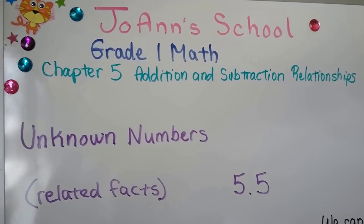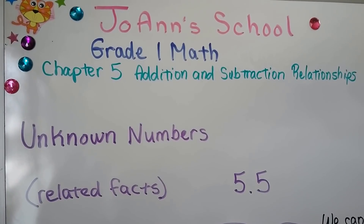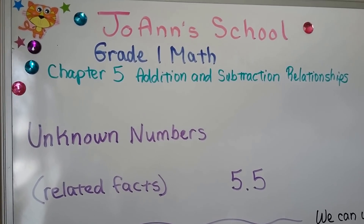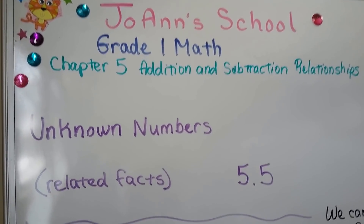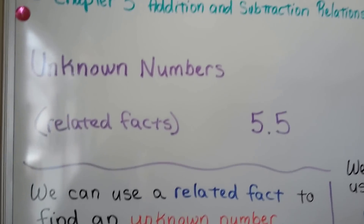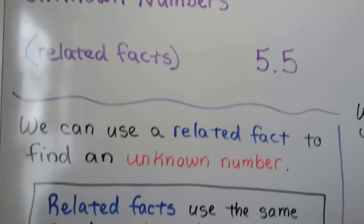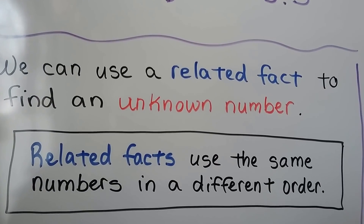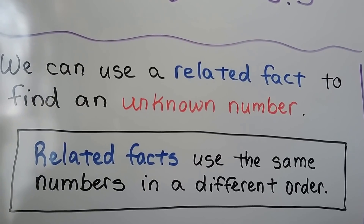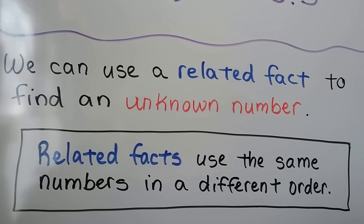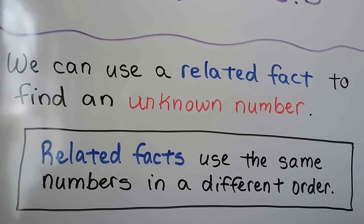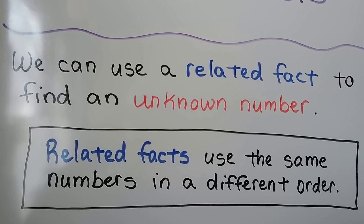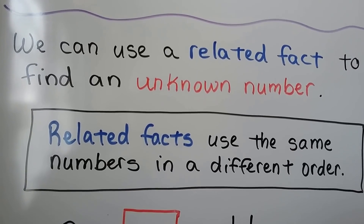Lesson 5.5: Unknown Numbers. We're going to use related facts to help us find an unknown number. Remember, related facts use the same numbers in a different order.